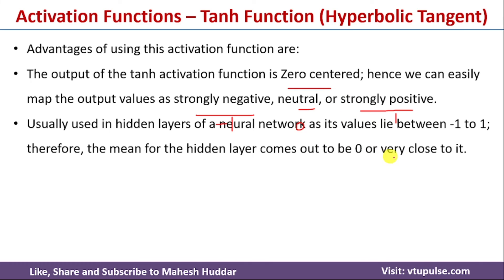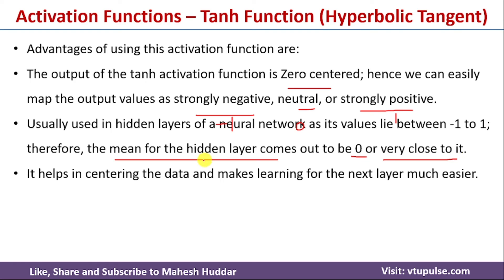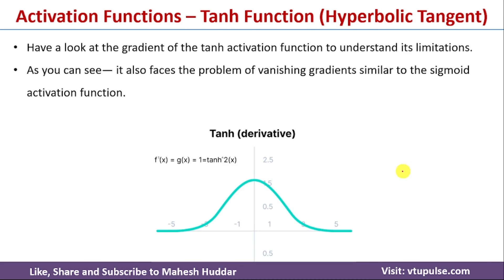The dataset can be mapped from −1 to +1, meaning the mean of the hidden layer can become 0 or very close to 0. This helps in centering the data and makes learning for the next layer much easier.